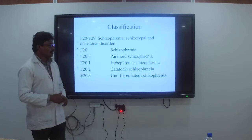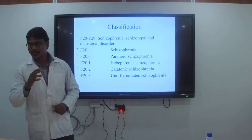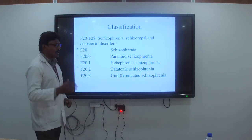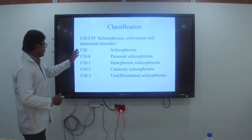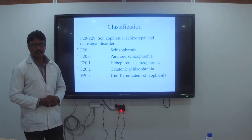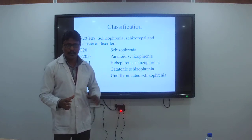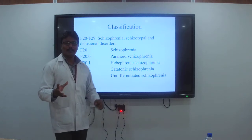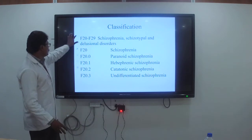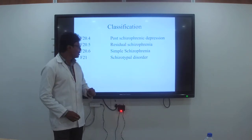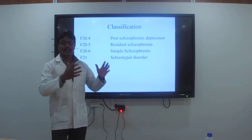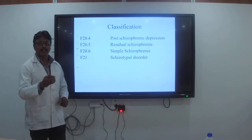Moving towards the classifications as per ICD-10, these are categorized from F20 to F29, covering schizophrenia, schizotypal, and certain delusional disorders. F20 is pure schizophrenia. Under F20 we can see paranoid schizophrenia, hebephrenic, catatonic, undifferentiated, post-schizophrenic depression, residual schizophrenia, simple schizophrenia, and schizotypal disorders. We will see what all these mean in detail.